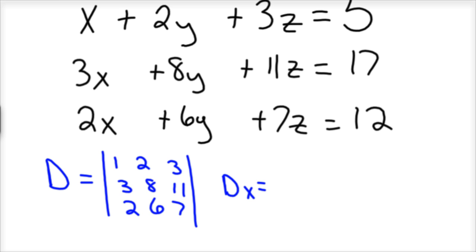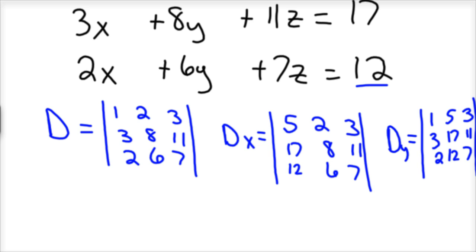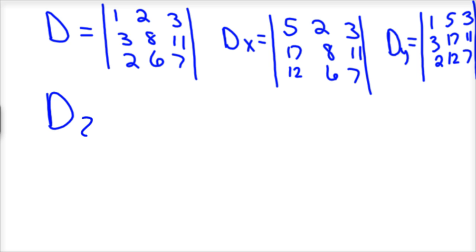Dx is going to be you take the 5, 17, and 12 here, put it in place of your x. So 5, 17, 12, and then we'd have 2, 3, 8, 11, 6, 7. That's Dx. Dy, you place that 5, 17, 12 in the middle column. So we'd have 1, 3, 2, 5, 17, 12, and then 3, 11, and 7. That's Dy. And then all we have is one more which is Dz. For Dz, you place the 5, 17, 12 in the final column and then leave everything else the same. So 1, 3, 2, 2, 8, 6.